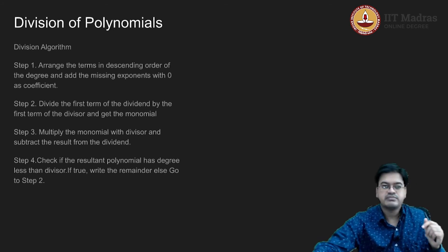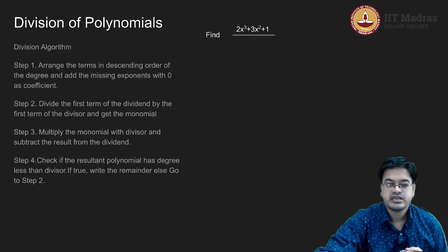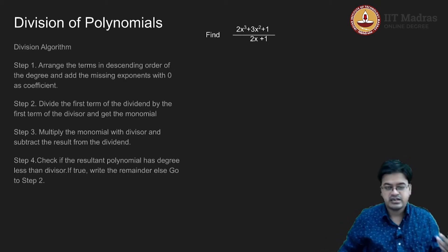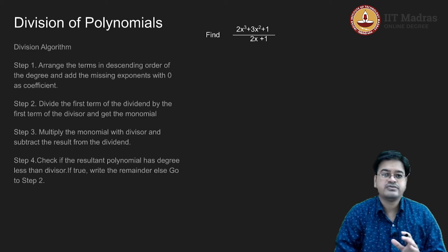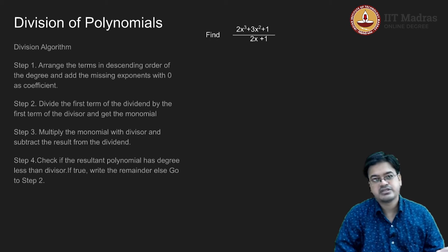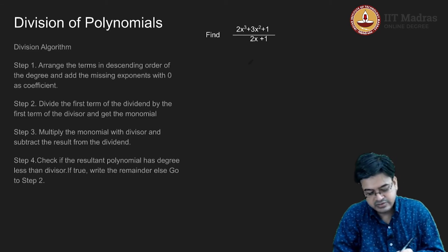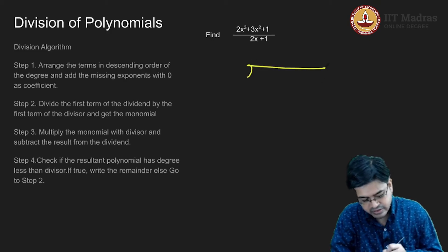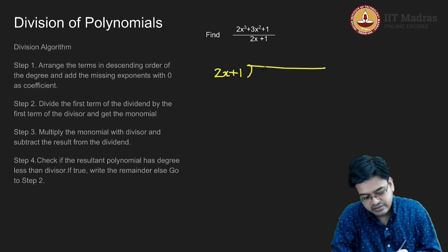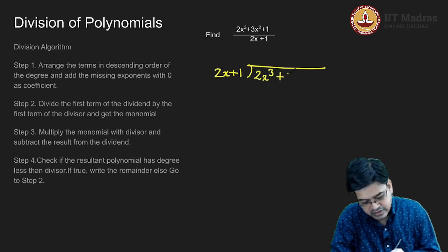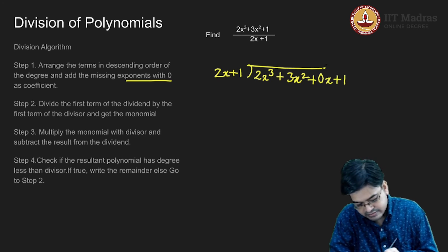Let us understand this division algorithm by using one example. The example is: (2x³ + 3x² + 1) divided by (2x + 1), and I want to find the answer. We will use the long division method, which works in a similar manner with the same division algorithm. In long division, you put 2x + 1 outside the parenthesis and write 2x³ + 3x² + 0x + 1 inside, adding the missing exponent with coefficient 0.